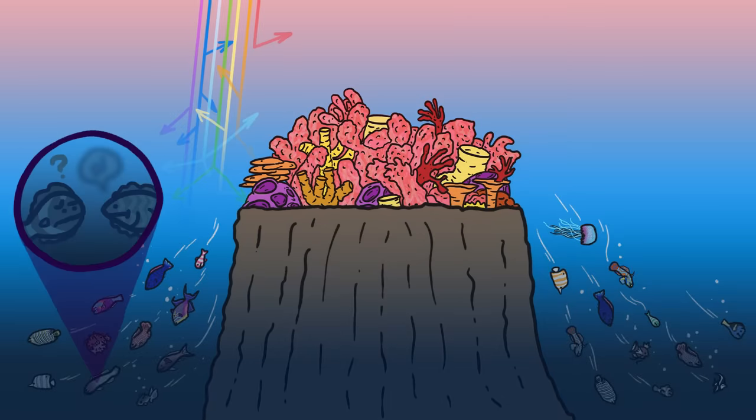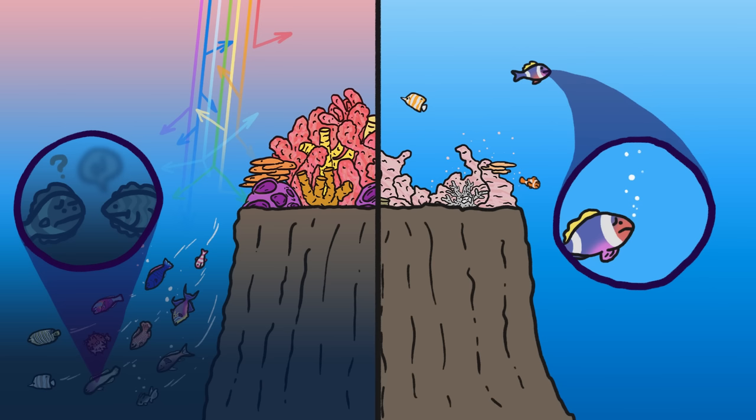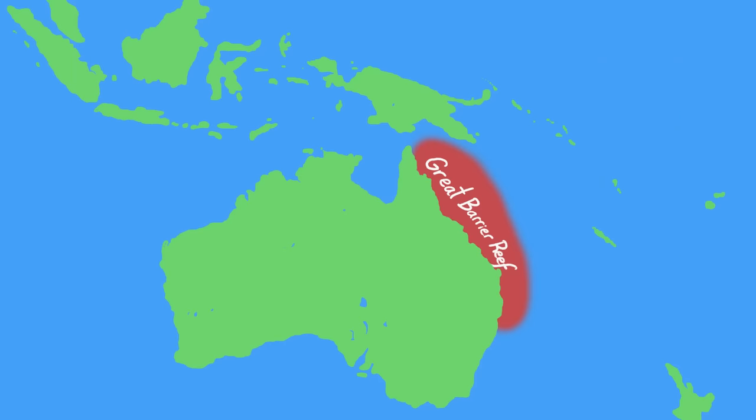if warming temperatures force fish deeper, where less light means color fades even at close range, or if corals start dying off and can't pack in as many species, bright colors won't be as helpful for communication, and reefs could become much more drab.